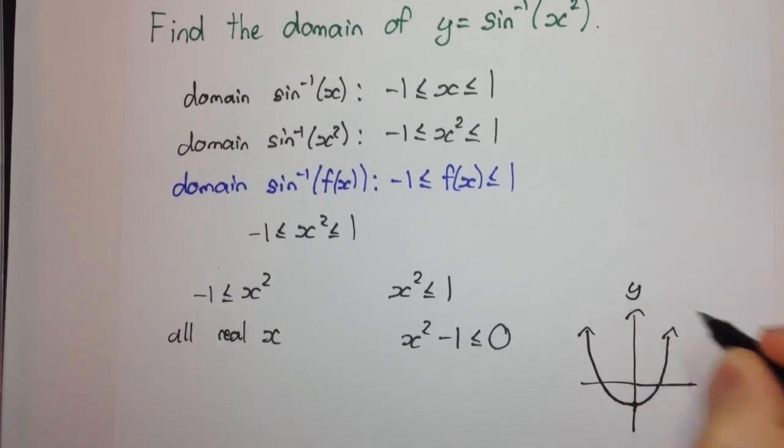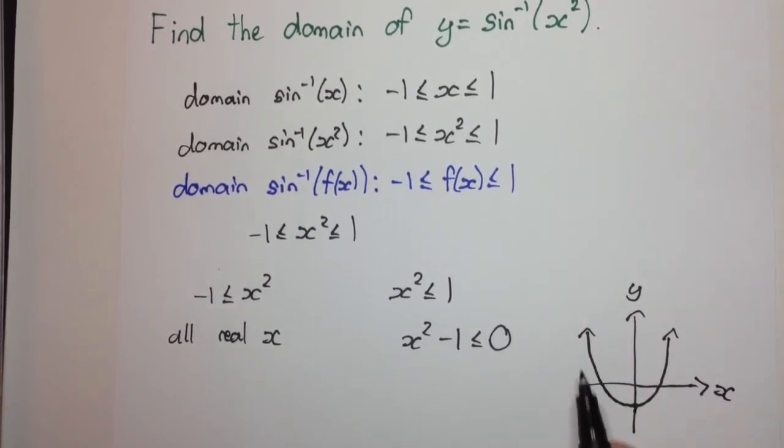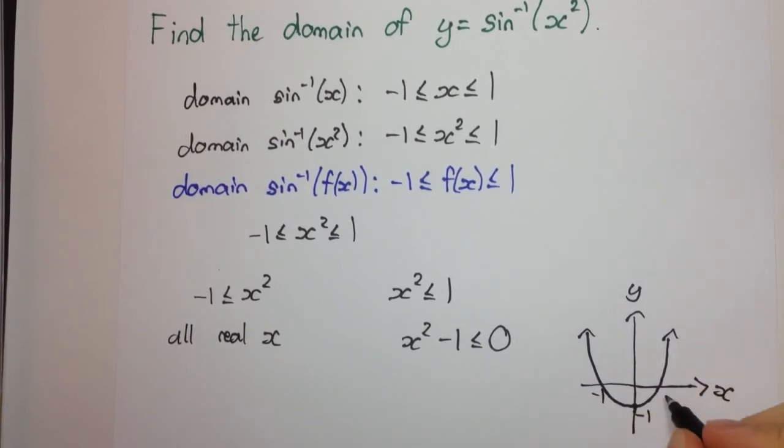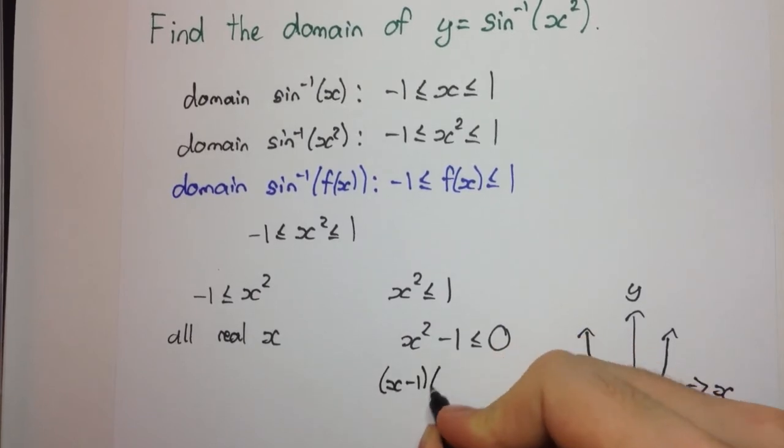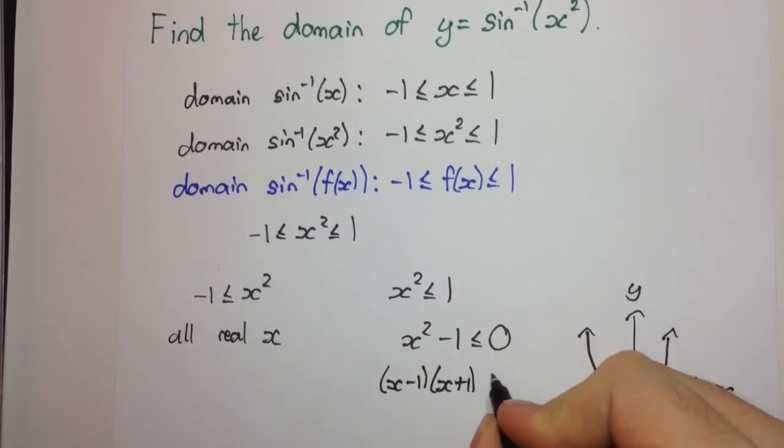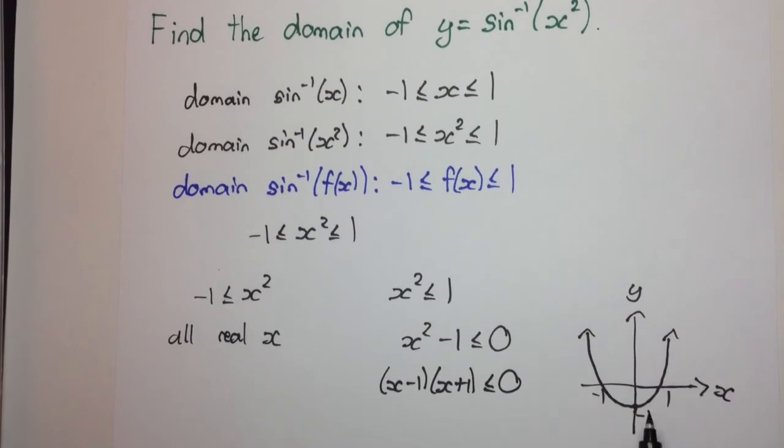it's going to cross at minus 1. So this is our y-axis and our x-axis. And that's our parabola, and this point is minus 1. Now the x-intercepts are going to be minus 1 and 1. So we see that by factorizing like this.